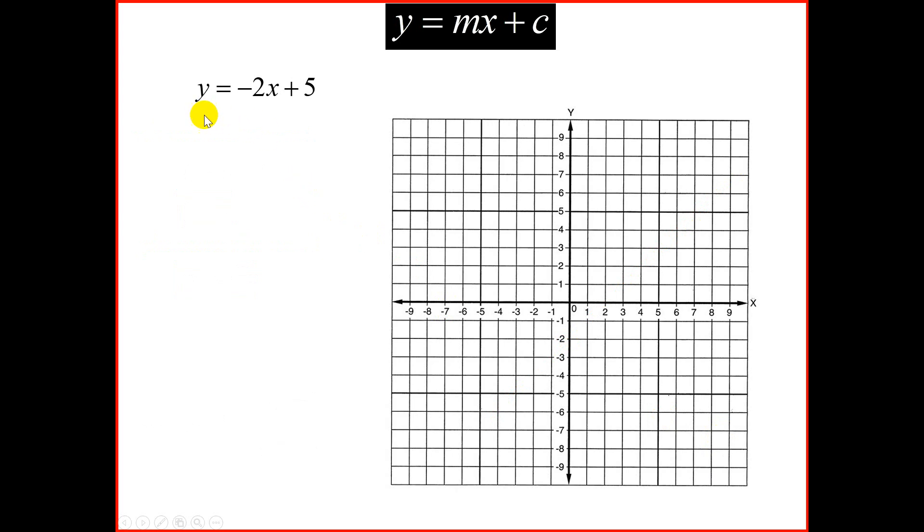The next example, y equal to minus 2x plus 5. Once again, x-intercept, we let y to be 0. So 0 is equal to minus 2x plus 5.